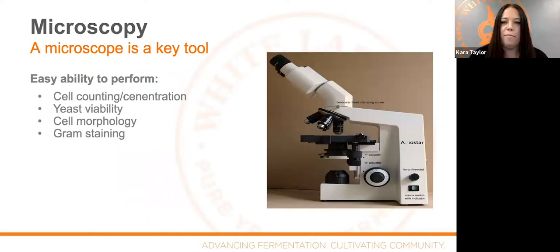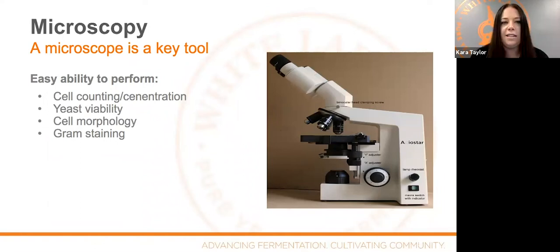Moving on to microscopy — with a microscope you can do cell counting, yeast viability, and look at cell morphology. It's really important to know what each of your strains looks like under the microscope. They all don't look the same. Just getting to know what they look like can be really helpful when looking at the slurry.